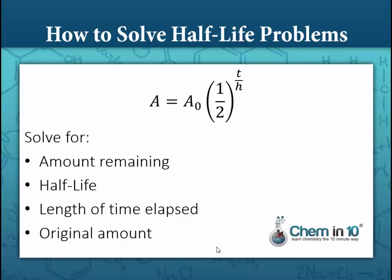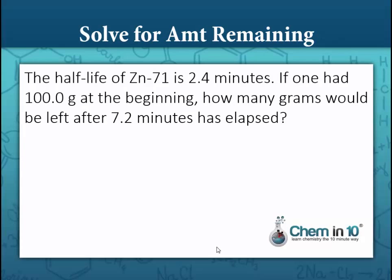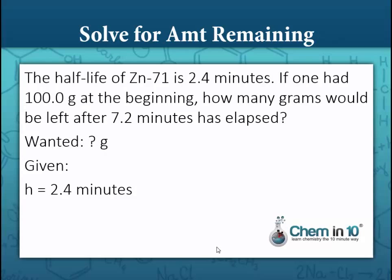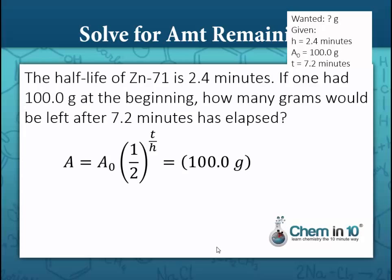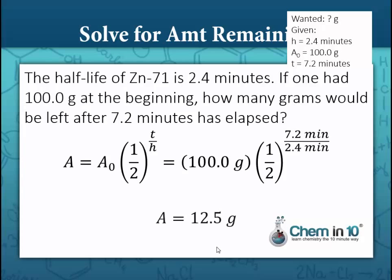Let's look at some sample problems. In the first example, we will solve for the amount of sample remaining. The half-life of zinc-71 is 2.4 minutes. If one had 100.0 grams at the beginning, how many grams would be left after 7.2 minutes has elapsed? Our equation is: amount remaining equals original amount times one-half raised to the power of total time divided by length of half-life. The original amount is 100.0 grams, times one-half raised to the power of 7.2 minutes divided by 2.4 minutes per half-life. Therefore, the amount remaining is 12.5 grams.